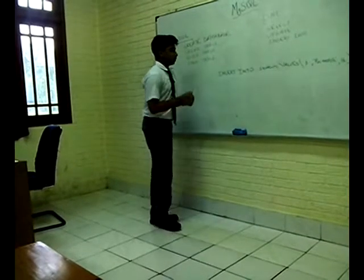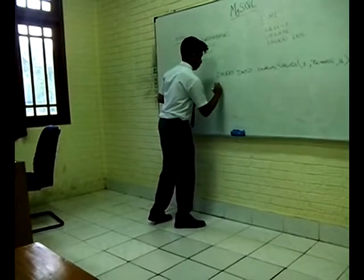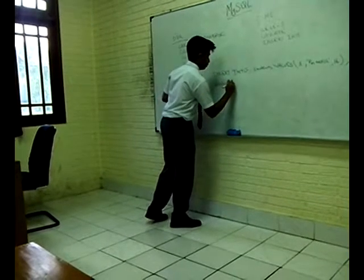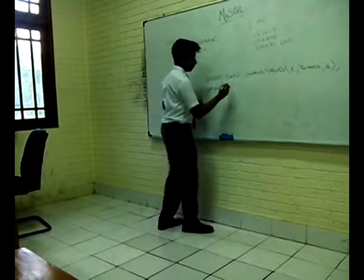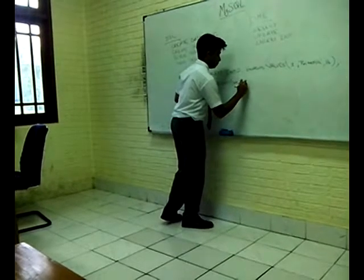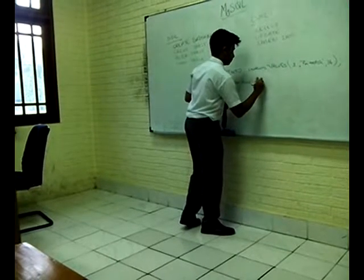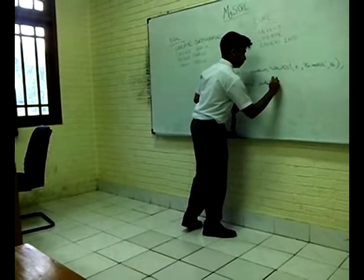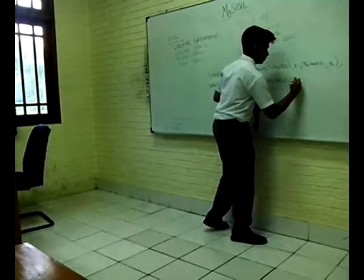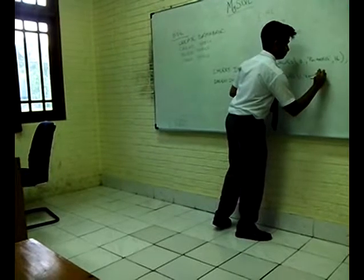We also have an option to enter the value of just one or some columns. For that, we write the column names we want — like just the serial number and name — after the table name, and then enter only those corresponding data values.